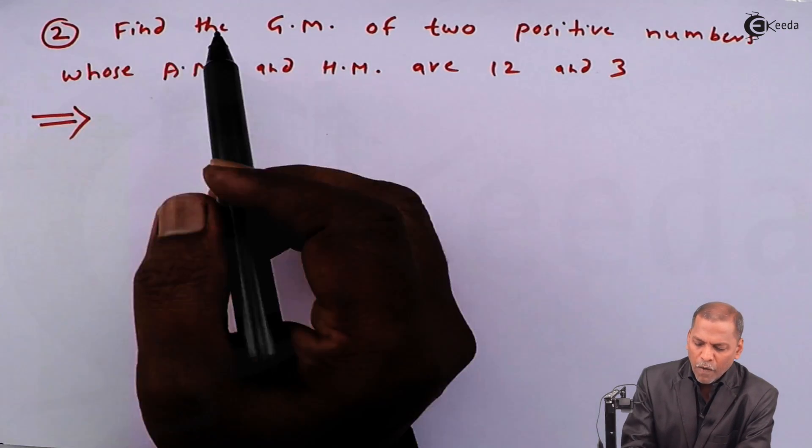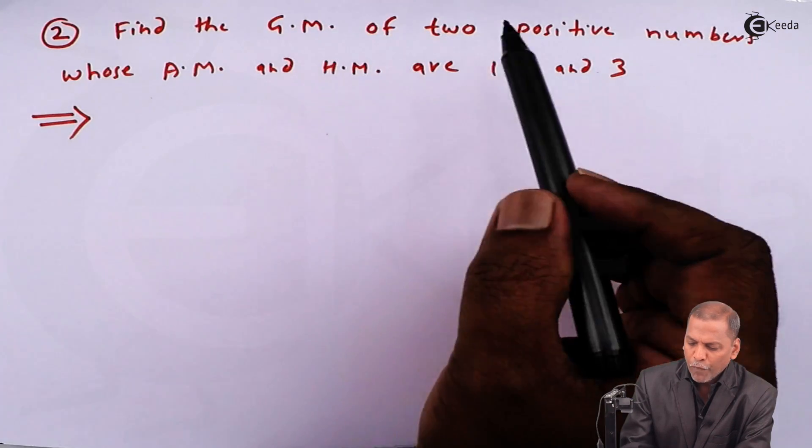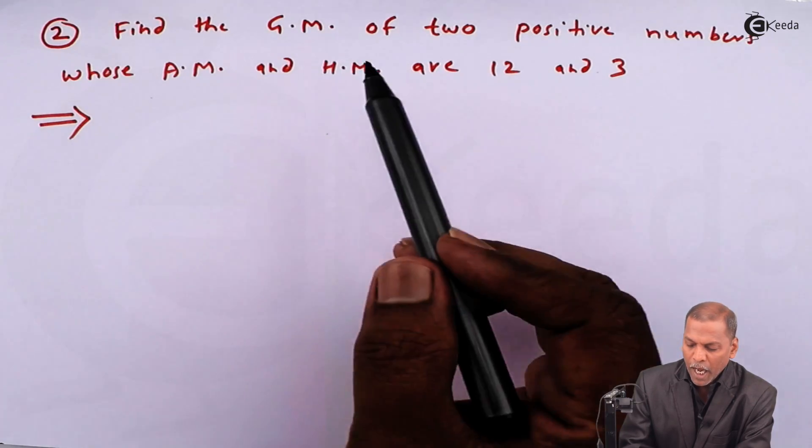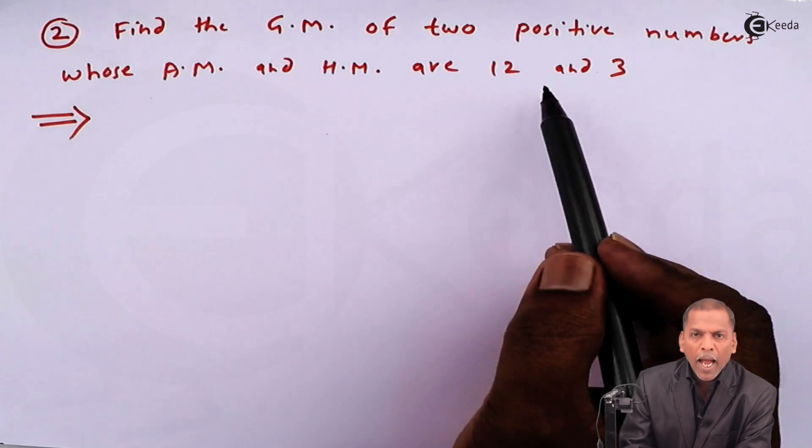The question is: find the geometric mean of two positive numbers whose arithmetic mean and harmonic mean are 12 and 3.